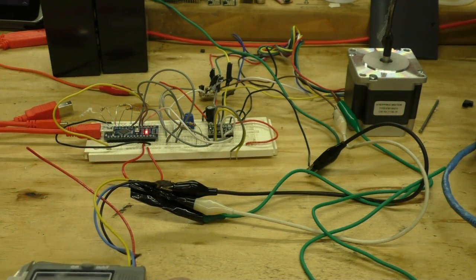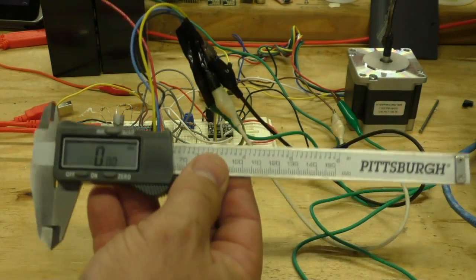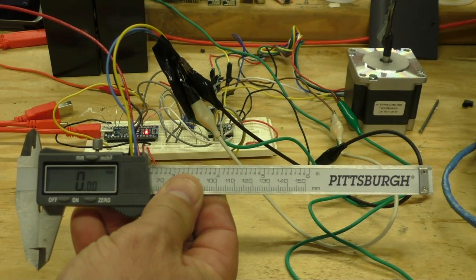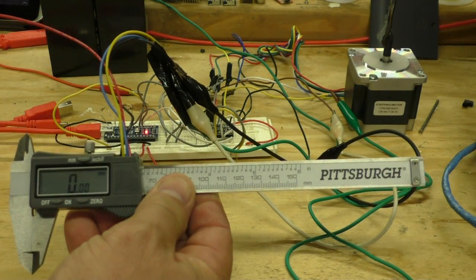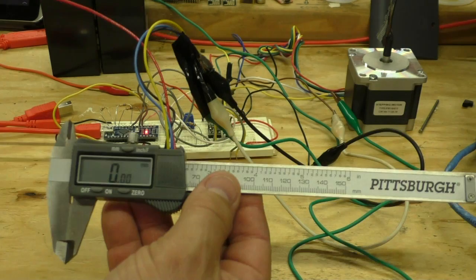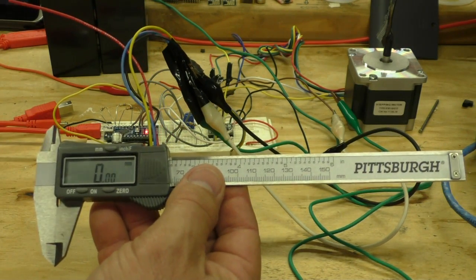Hey everybody, Bob here, and welcome to another making stuff video. This video is an update on the digital caliper project and where I'm at with the filament extruder. Here's my setup: I'm using this Pittsburgh brand digital caliper from Harbor Freight. This is the caliper you want to use for the filament extruder, and I'll go over that in a minute.